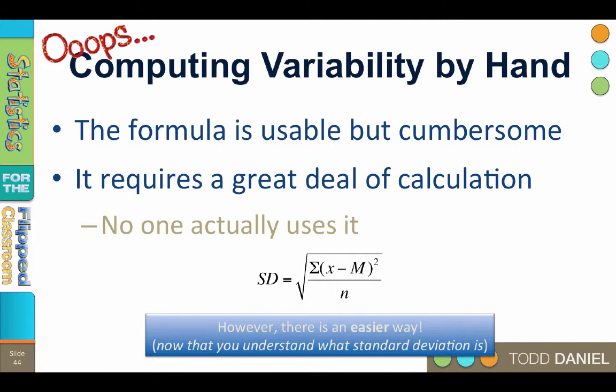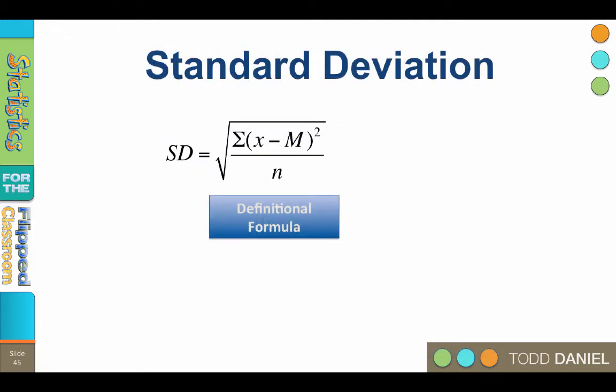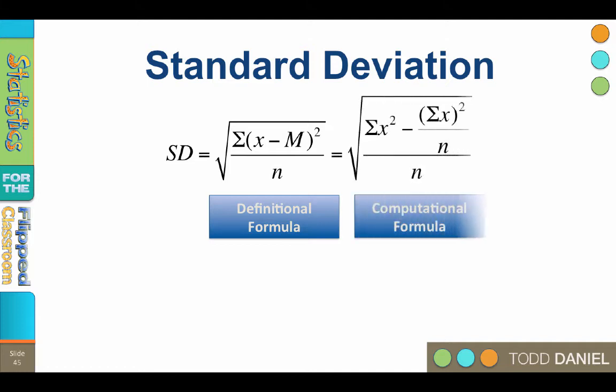However, there is an easier way. Using some algebra, we can transform this definitional formula into one that is much easier to use. A definitional formula is one that strictly follows the literal definition of a statistic — it clarifies concepts and it's easier to teach. While the definitional formulas are usable, the computational formulas simplify calculations when working by hand. Although it may look more complicated, it is really much easier to use.